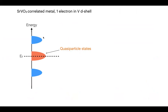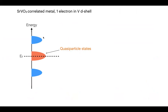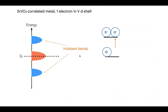What are Hubbard bands and quasi-particle states? Sketches typically show quasi-particle states around the Fermi level — basically what DFT gives but renormalized — and then Hubbard bands that correspond to exciting the local d shell by adding electrons, changing from one multiplet state to another.